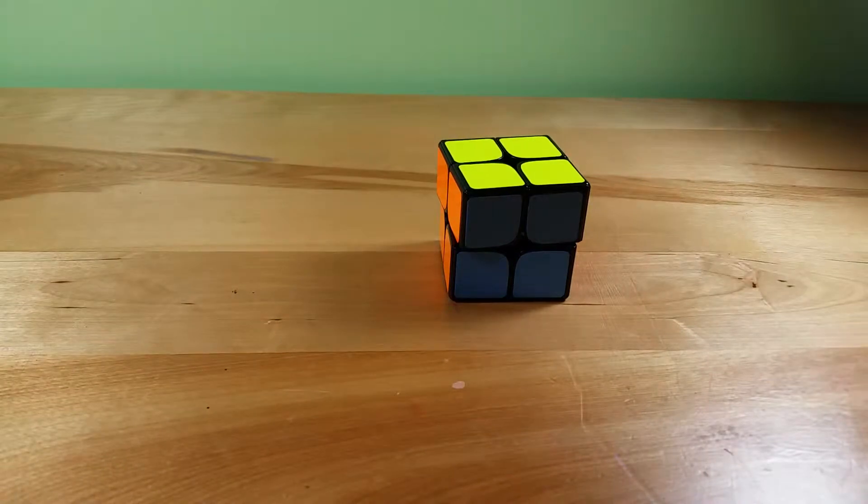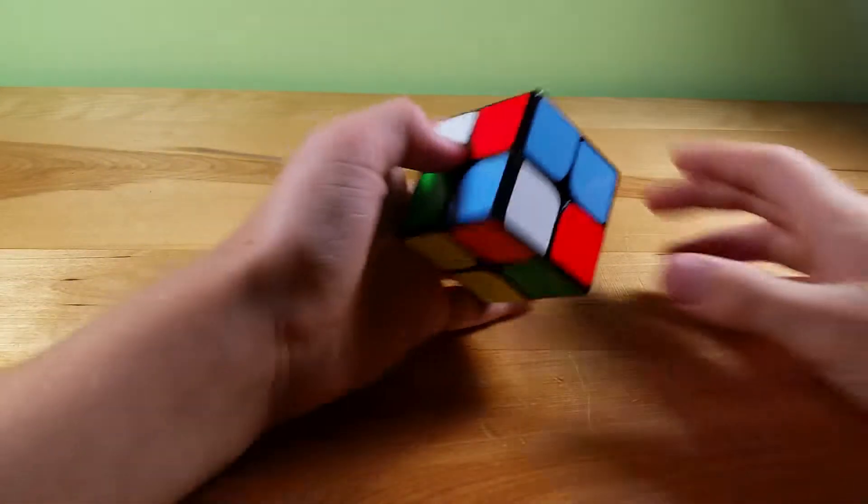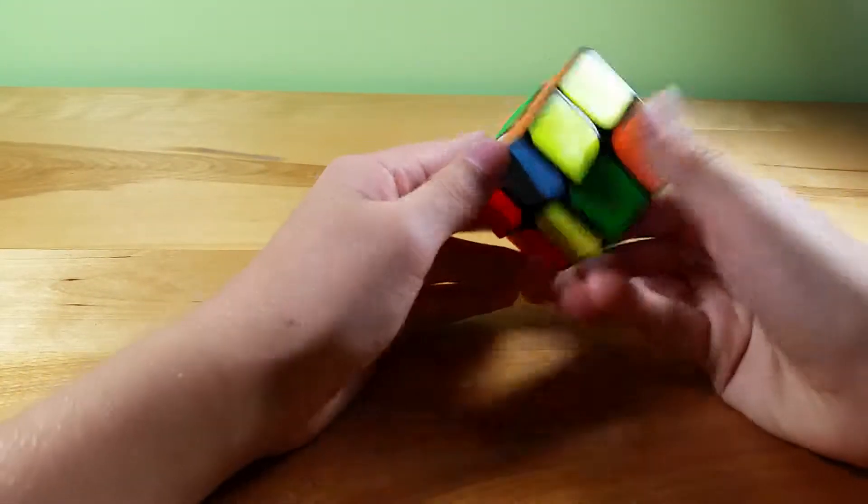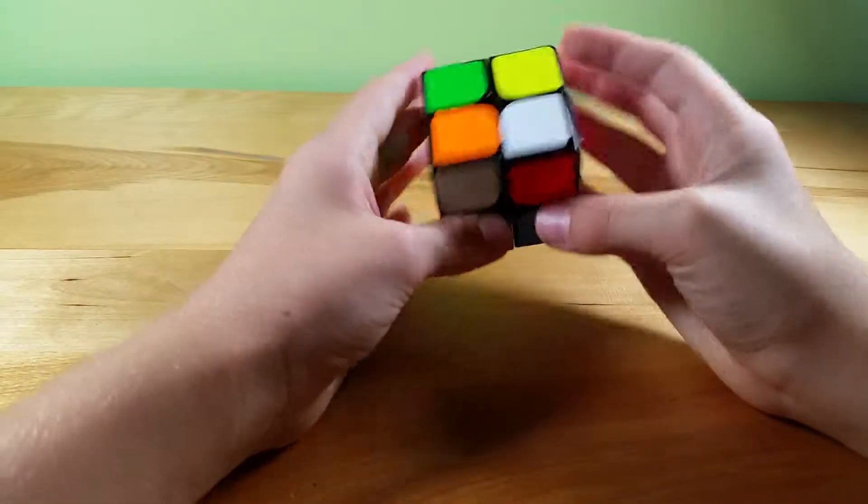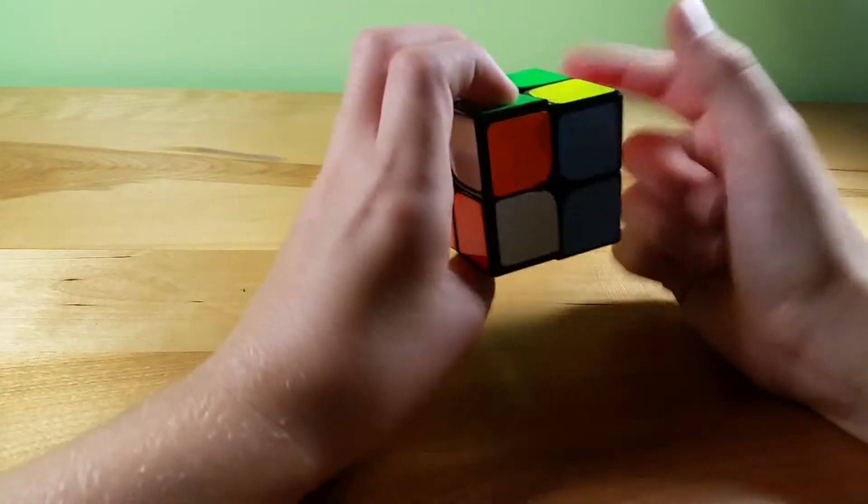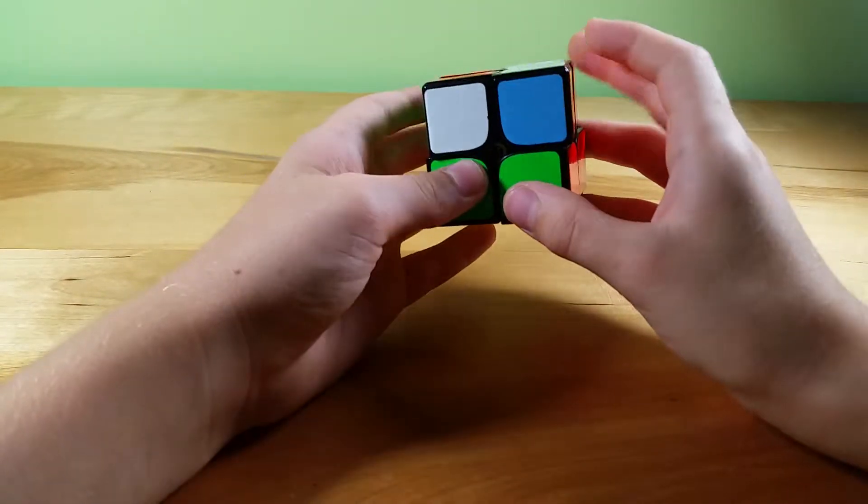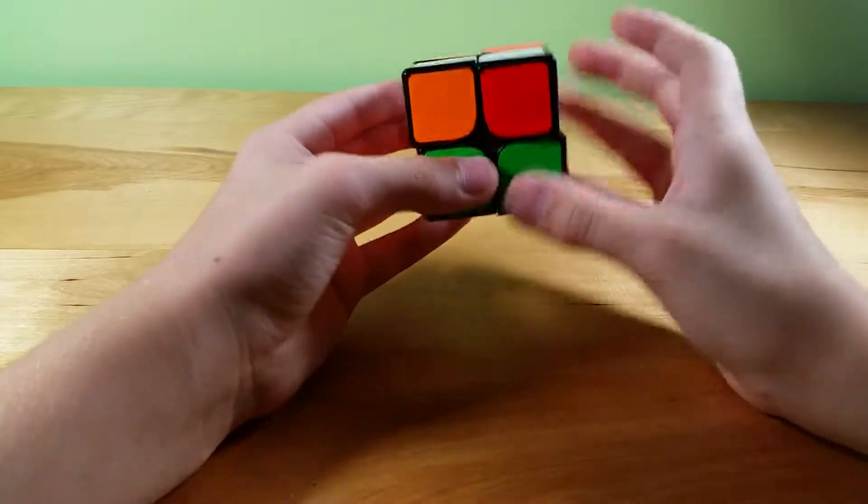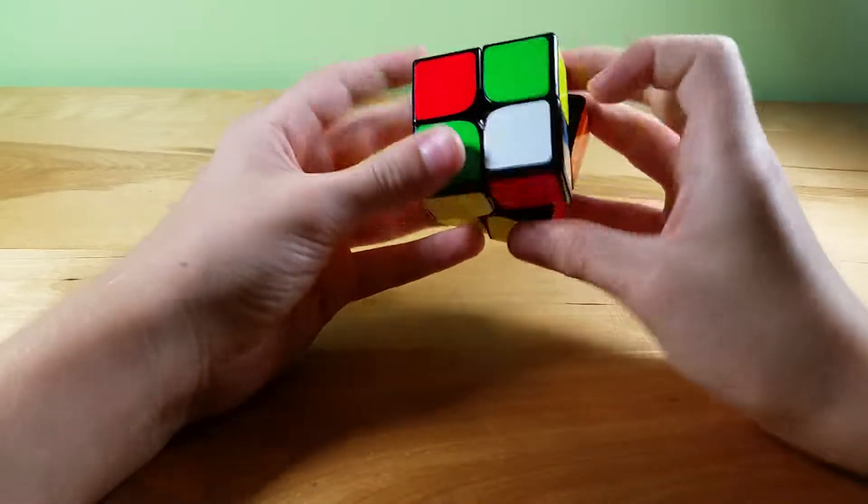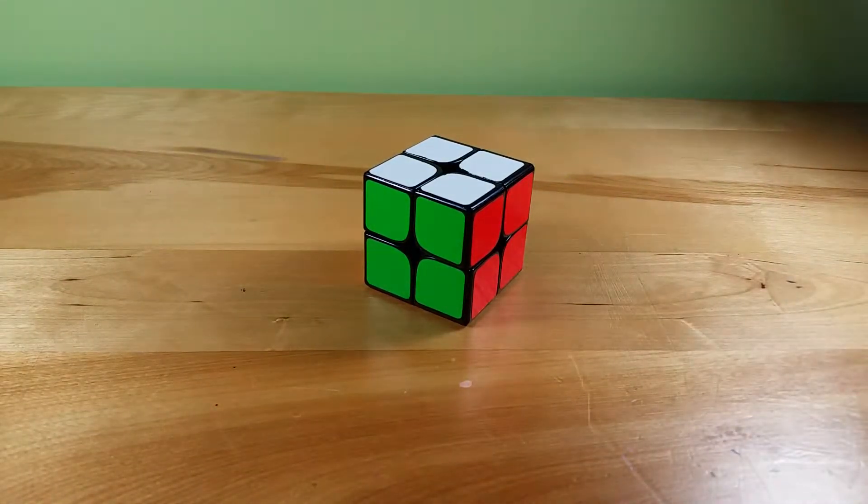So now last 2x2 walkthrough solve. Okay so last one, sorry if I'm going a little fast. I would probably do yellow because I already have this block here and I see these two so I'd do like U R to place that one, put that one for an insert in the back like that, and then here we just have this fairly easy CLL case. So yeah, let's move on to the 3x3 beginner's method walkthrough solves.